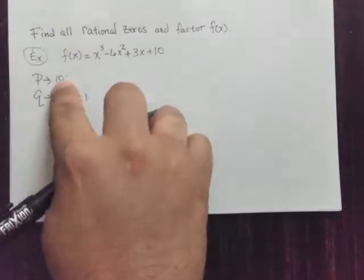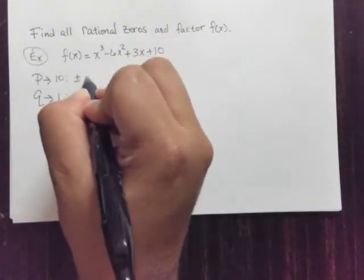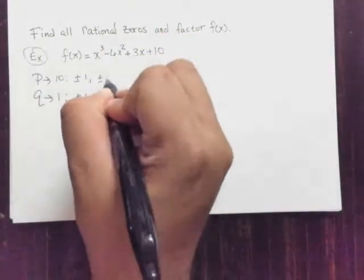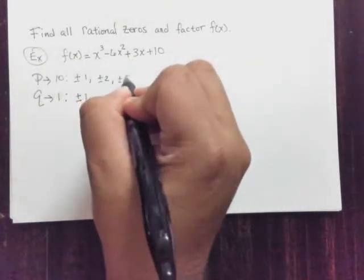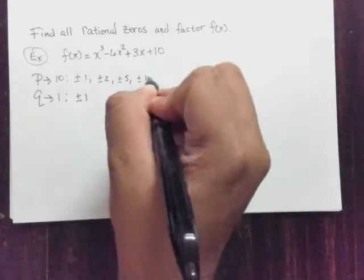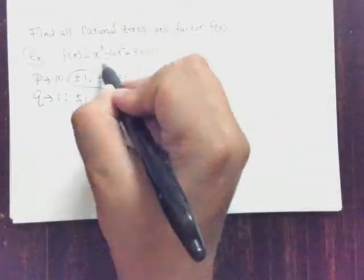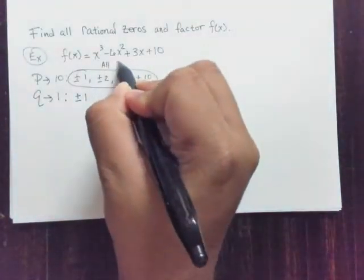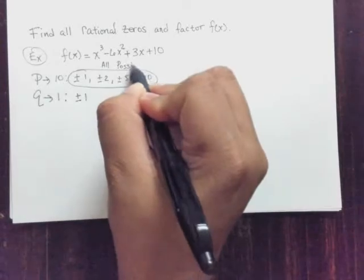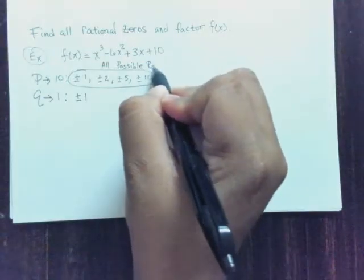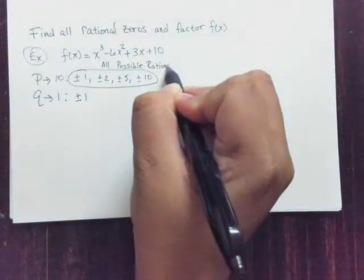And we list all the factors of 10. In this case, 1, 2, 5, and 10. So this right here comprises our set of all the possible rational zeros. I'm going to put all possible rationals.